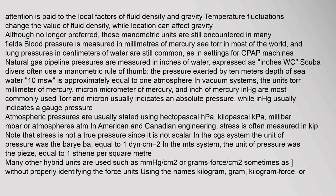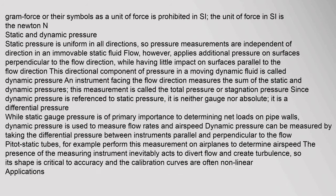In American and Canadian engineering, stress is often measured in ksi. Note that stress is not a true pressure since it is not scalar. In the CGS system, the unit of pressure was the barye (Ba), equal to one dyne cm⁻². In the MTS system, the unit of pressure was the pièze, equal to one sthène per square meter. Many other hybrid units are used, such as millimetre of mercury per square centimetre or grams-force per square centimetre. Using the names kilogram, gram, kilogram-force, or gram-force as a unit of force is prohibited in SI; the unit of force in SI is the newton (N).